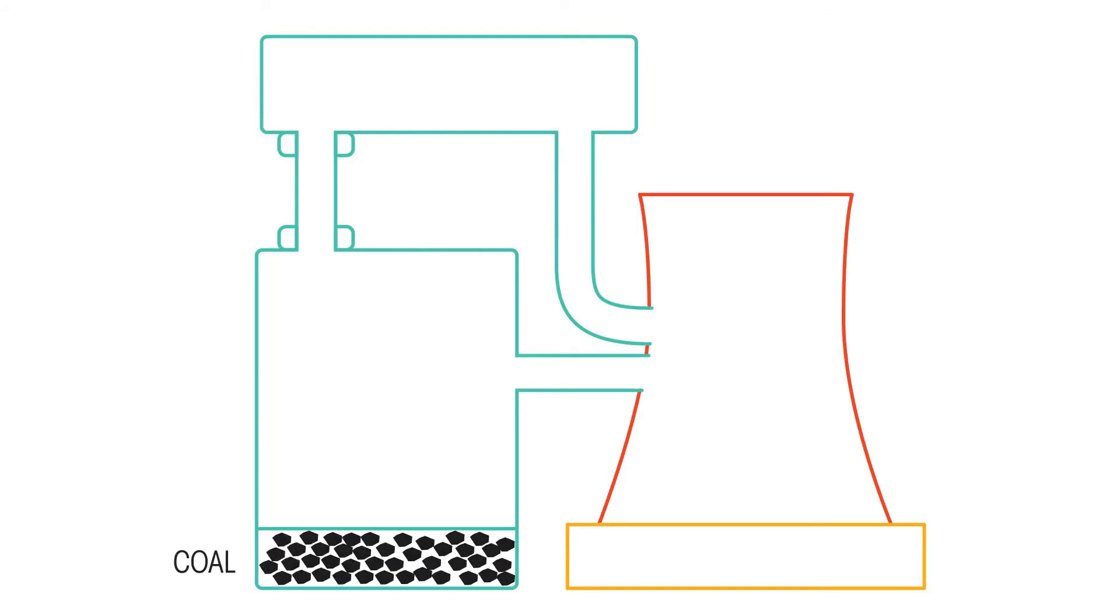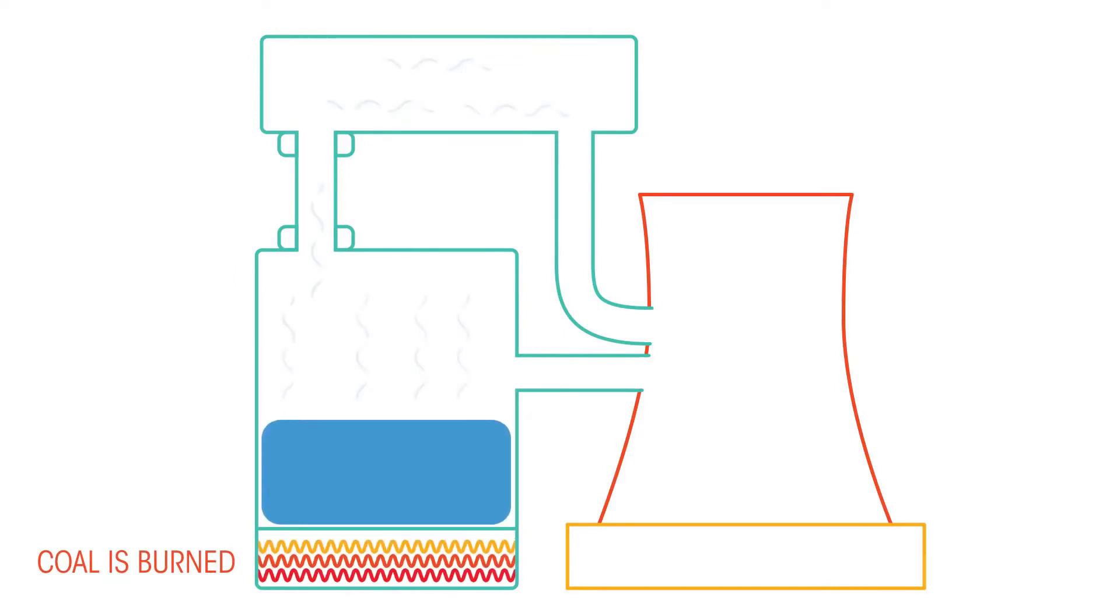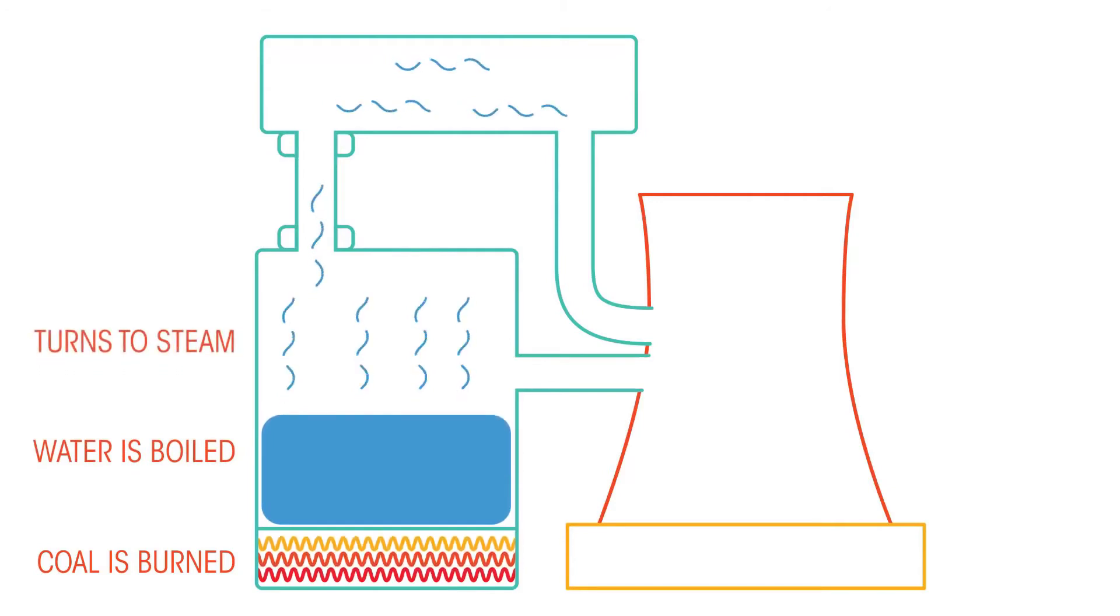So, fossil fuels in power stations: most power stations use coal as an energy source and they work in the following way. One: coal is burned in a power station. The heat produced as the coal burns is used to heat water. The water boils and turns into steam.